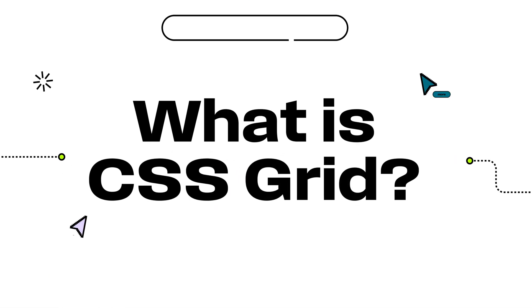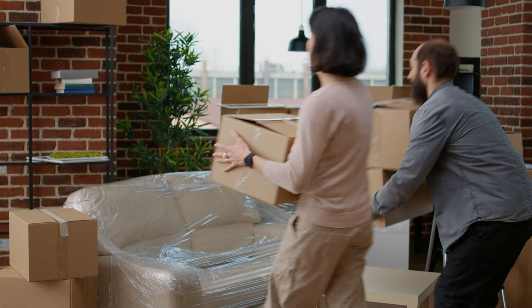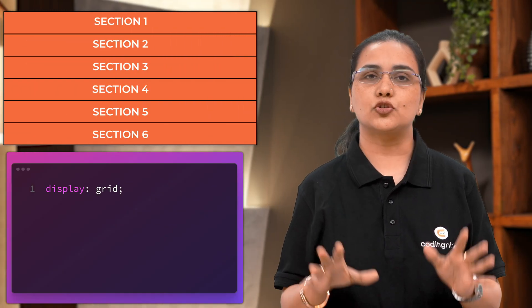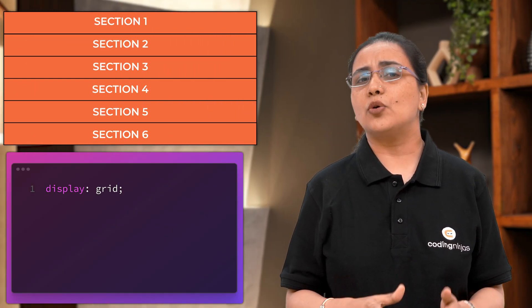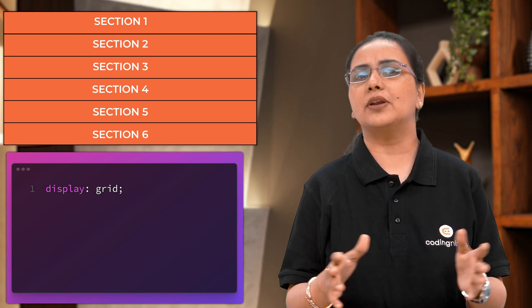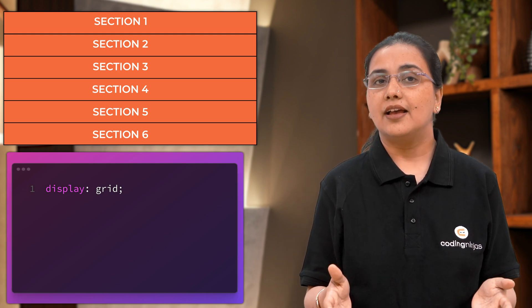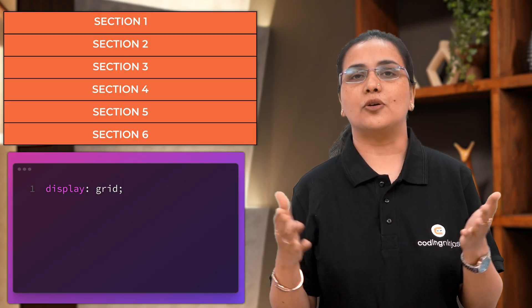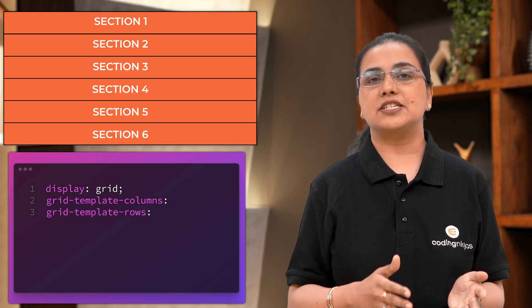Now let's see what CSS Grid is. Imagine you are arranging furniture — not just in a line, but across the whole space. That's CSS Grid. Grid gives you rows and columns. It's like having a blank canvas and you are placing things exactly where you want. To apply grid to your layout, you just set the display property to grid. With that comes so many other properties — normally it looks like a normal block element, but you can set how many rows or columns you want on your screen using grid-template-columns and grid-template-rows.